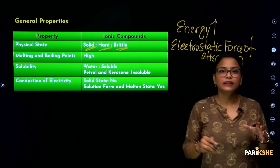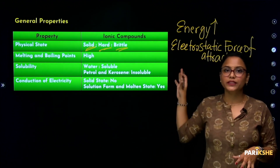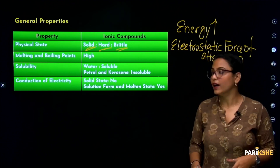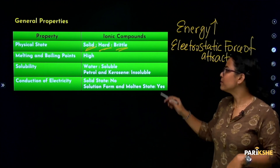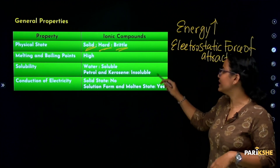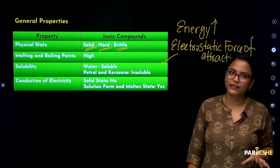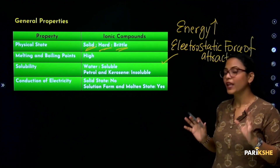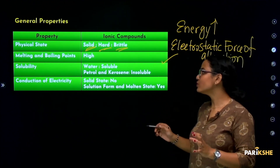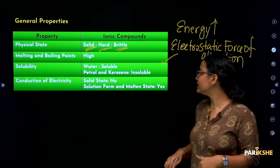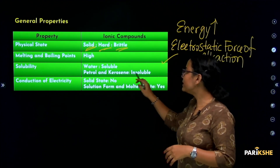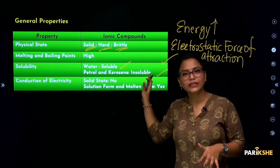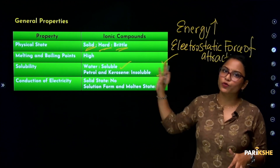The reason melting and boiling points are high is that the electrostatic force of attraction within ionic compounds is very strong — much more than the energy required to overcome it. So a large amount of energy is needed to separate the ions, which is why the melting and boiling points are high. Next is solubility: ionic compounds are soluble in water, but not soluble in petrol or kerosene.